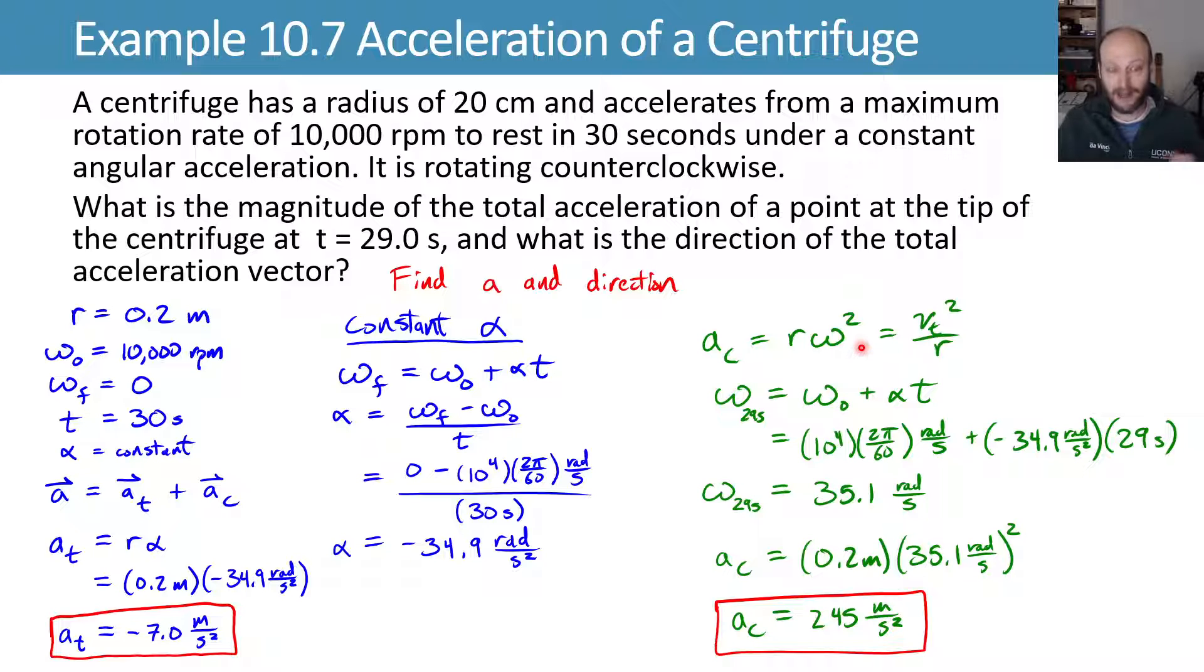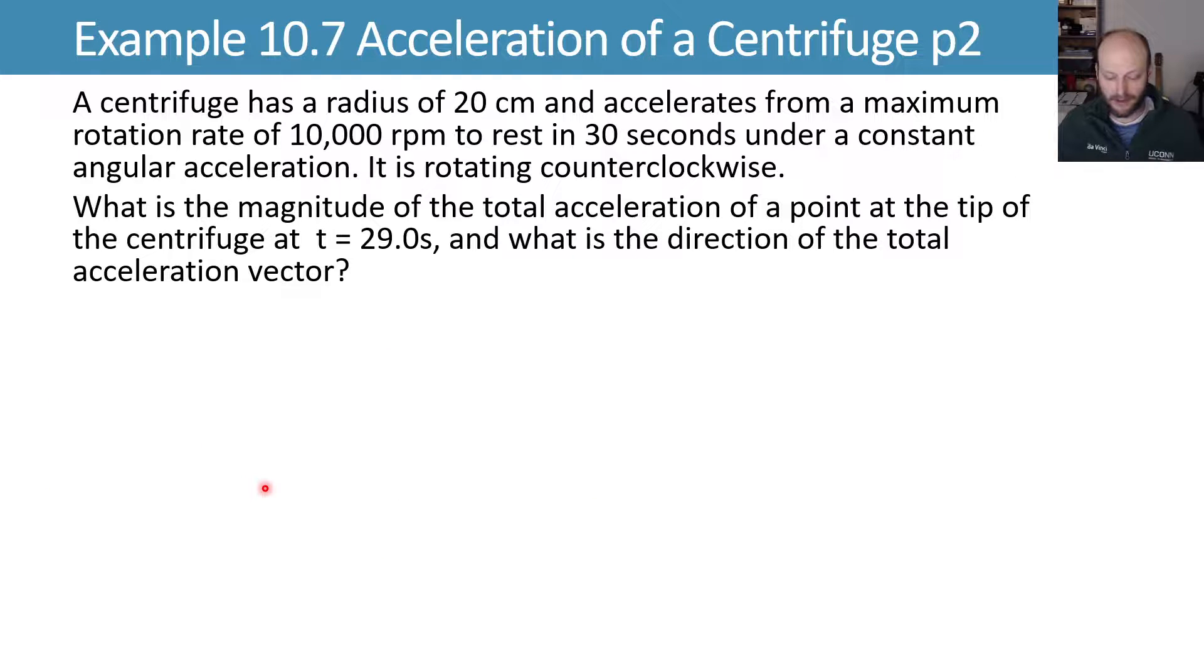We can now plug that in to this version of our centripetal acceleration equation and evaluate it to find a centripetal acceleration of 245 meters per second squared. Finally, we need to combine these using this vector sum. I'm going to give us a little bit more space here to do that. We'll draw a diagram here of our counterclockwise rotation and note that my centripetal acceleration is going towards the center of the circle and my tangential acceleration is slowing down.